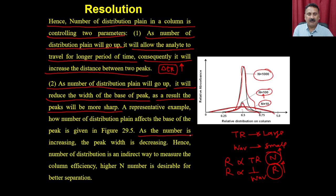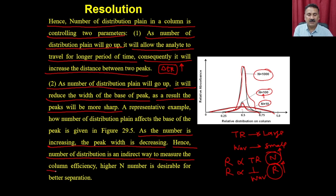The number of distribution planes is an indirect measure of column efficiency. A higher N number is desirable for better separation. When packing a column, you should ensure the packing is very compact so the number of distribution planes goes up.